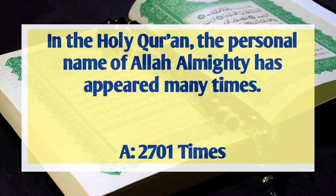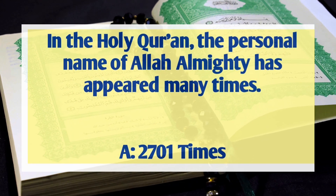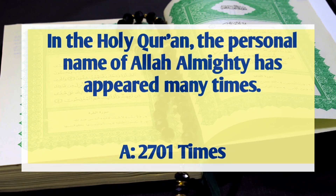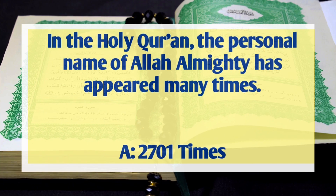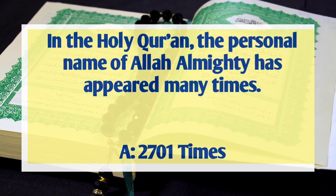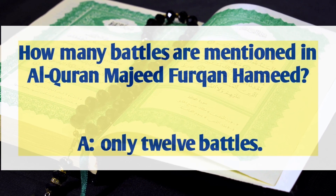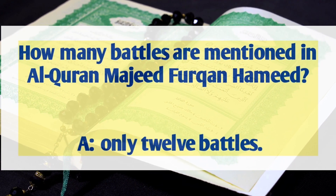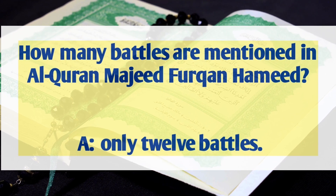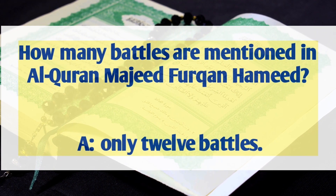In the Holy Quran, the personal name of Allah Almighty has appeared how many times? Answer: 2,701 times. How many battles are mentioned in the Holy Quran? Answer: only 12.